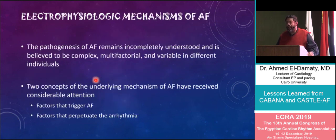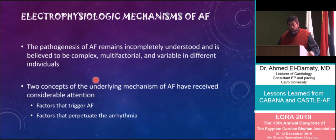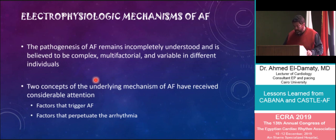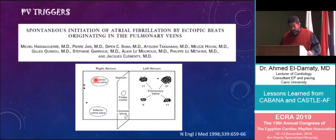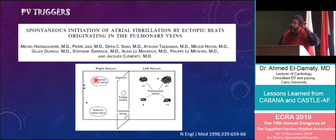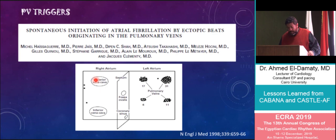AF has always been considered a complex disease with a multifactorial mechanism that is variable from one patient to the other. Two main mechanisms have taken considerable attention: triggers — whether pulmonary vein or non-pulmonary vein triggers — and mechanisms that perpetuate atrial fibrillation. This is the seminal observation by Haissaguerre and colleagues, pointing to the fact that ectopic activity from the pulmonary veins is associated with the development of atrial fibrillation in the majority of patients.